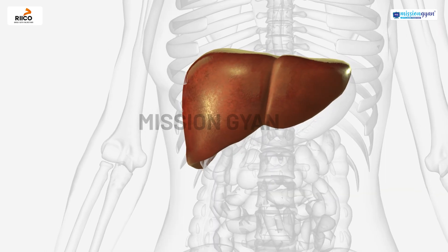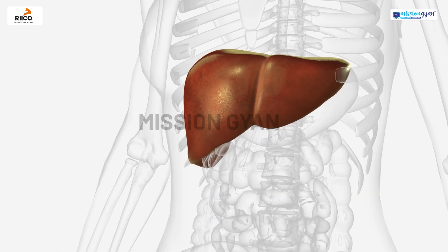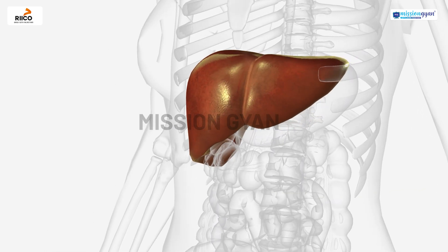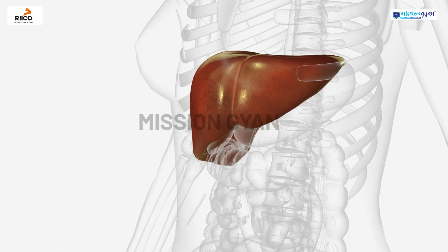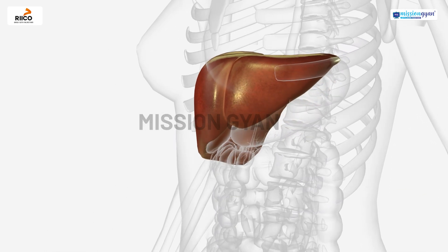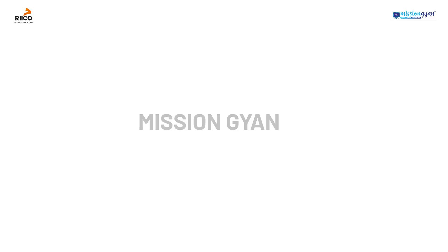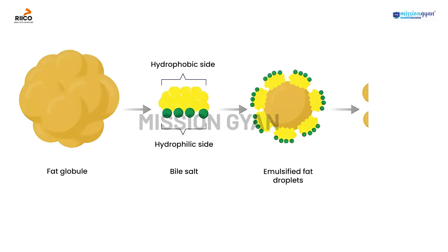The liver produces bile, a yellowish-greenish liquid that helps break down fats into smaller droplets.